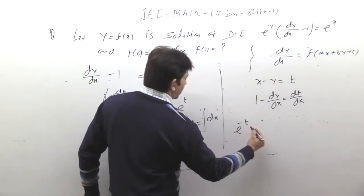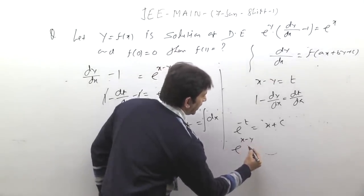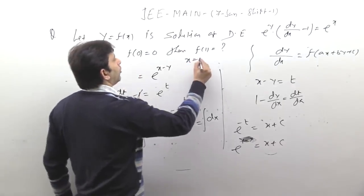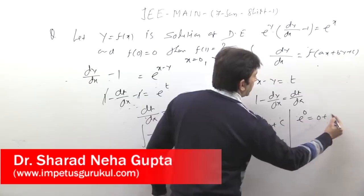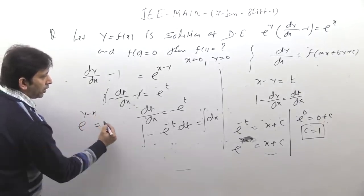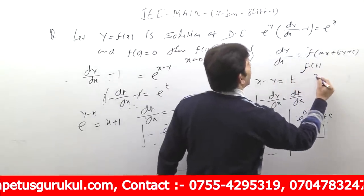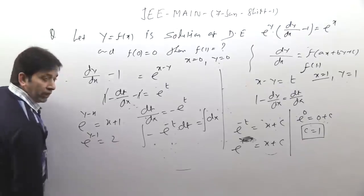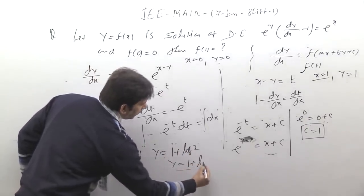So you get e^(−t) = x + c, which means e^(x−y) = x + c, so y − x = −ln(x + c). Now applying the initial condition x = 0, y = 0: e^(0−0) = 0 + c, so c = 1. With c = 1, the equation becomes e^(y−x) = x + 1. Now f(1) means x = 1: e^(y−1) = 2, so y − 1 = log 2, therefore y = 1 + log 2, i.e., f(1) = 1 + ln 2.